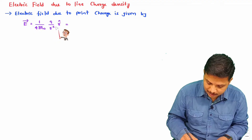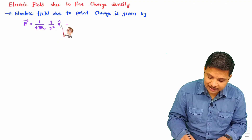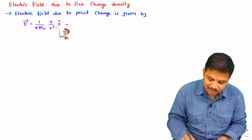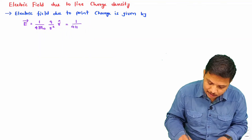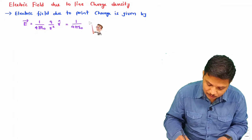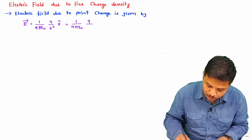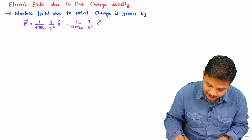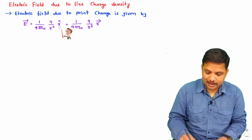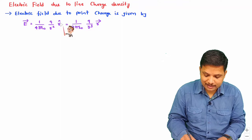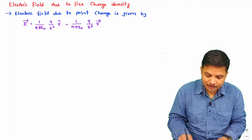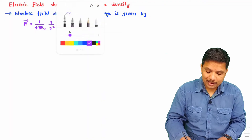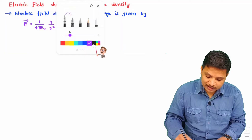Now, this unit vector r is vector r divided by magnitude of r. So we can rewrite the formula as 1 by 4 pi epsilon 0 into q divided by r cubed into vector r, since writing unit vector r as vector r divided by magnitude of r places r cubed in the denominator. Now let us consider a three-dimensional coordinate system.